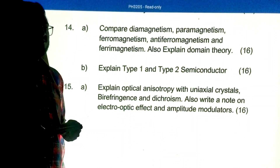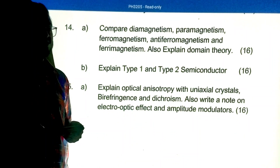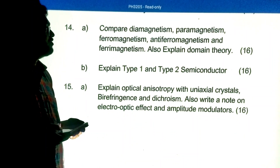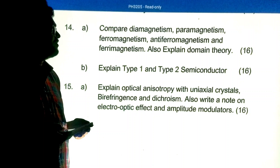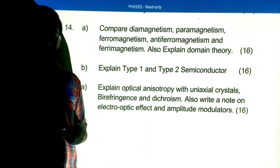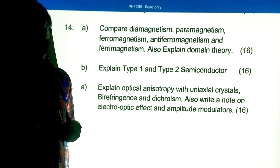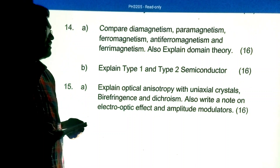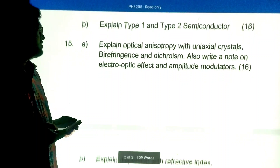Part B, Unit 4 important questions: Compare dia, ferro, anti-ferro, and ferri magnetism. Also explain the domain theory. Explain Type 1 and Type 2 superconductors.